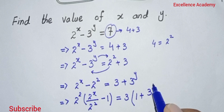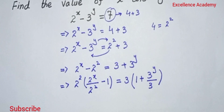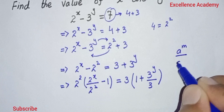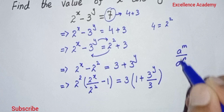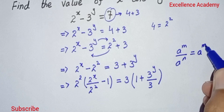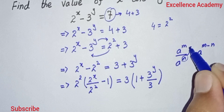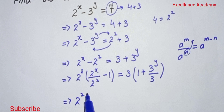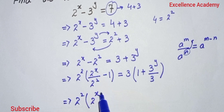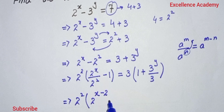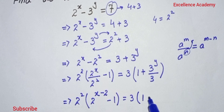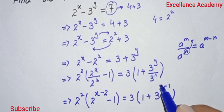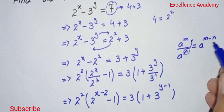From the right hand side we take 3 as common, giving us 3 times (1 plus 3^y divided by 3). Using the law of exponents — if the bases are the same, a^m divided by a^n equals a^(m minus n) — our equation becomes 2^2 times 2^(x minus 2) minus 1 equals 3 times (1 plus 3^(y minus 1)).